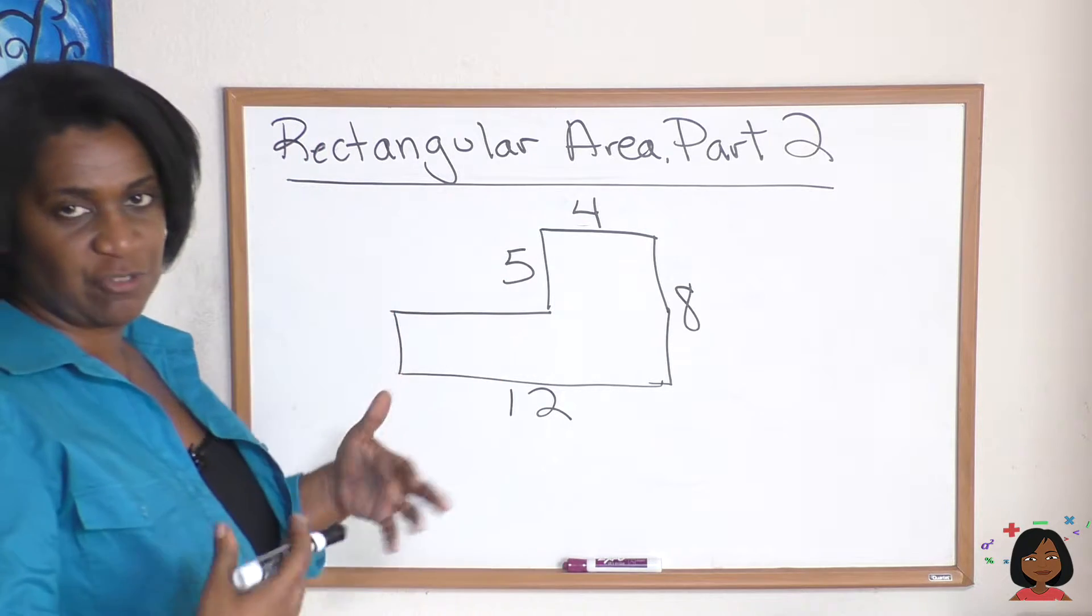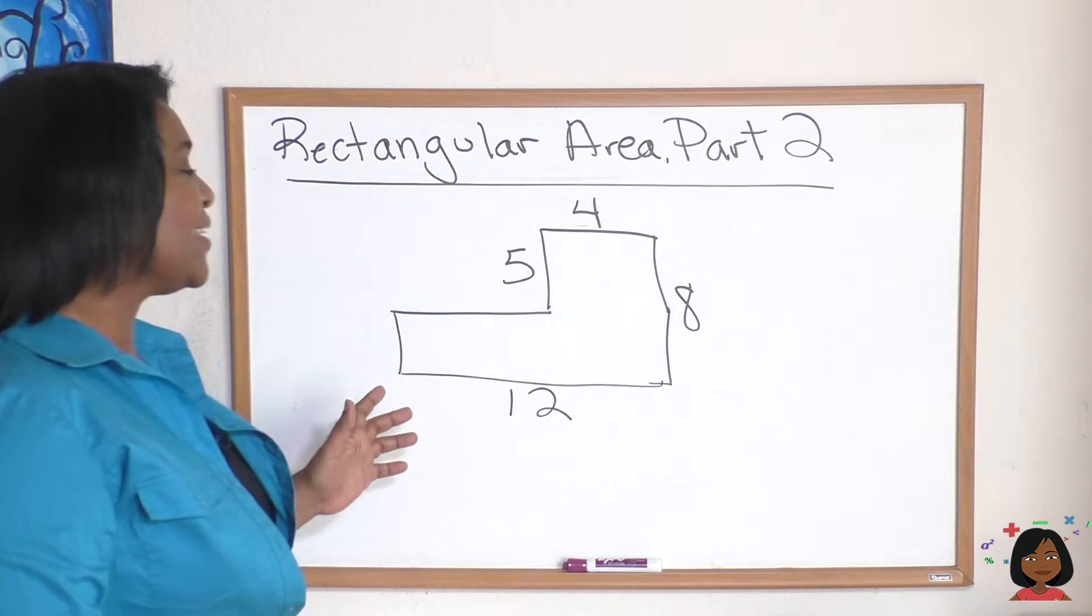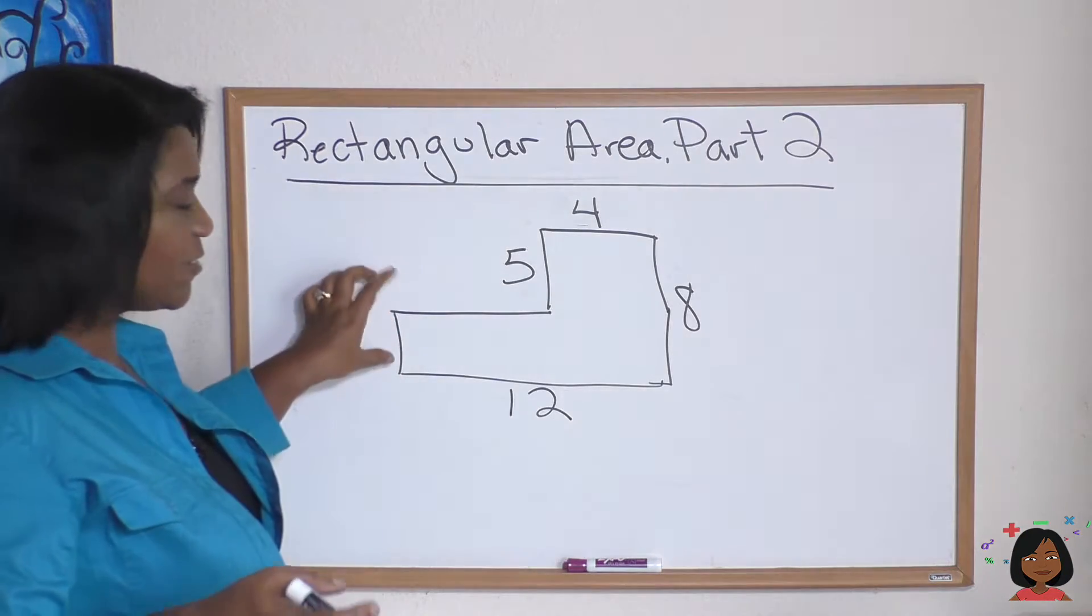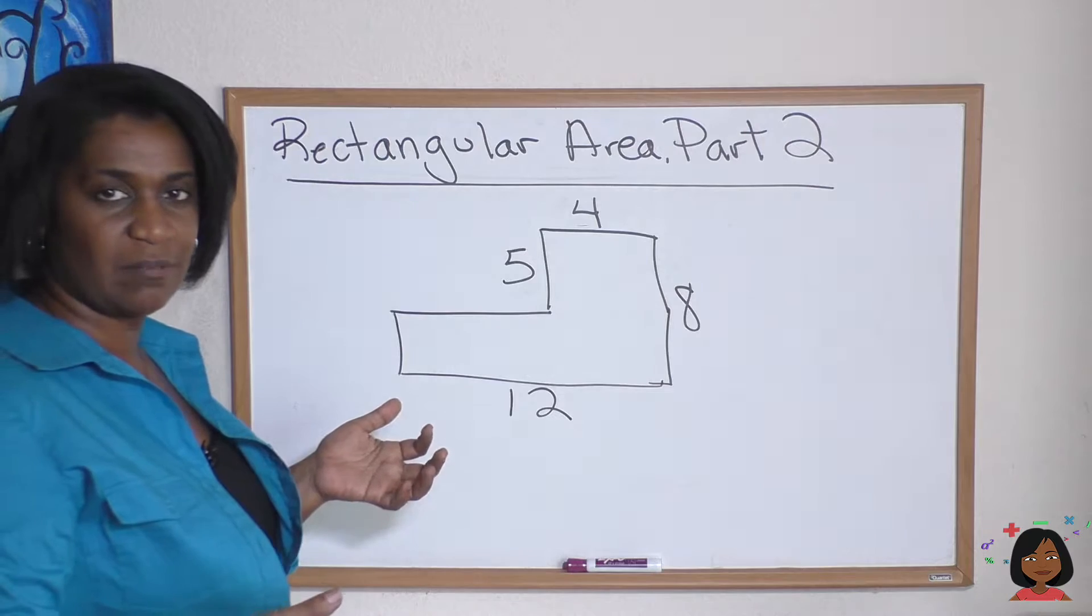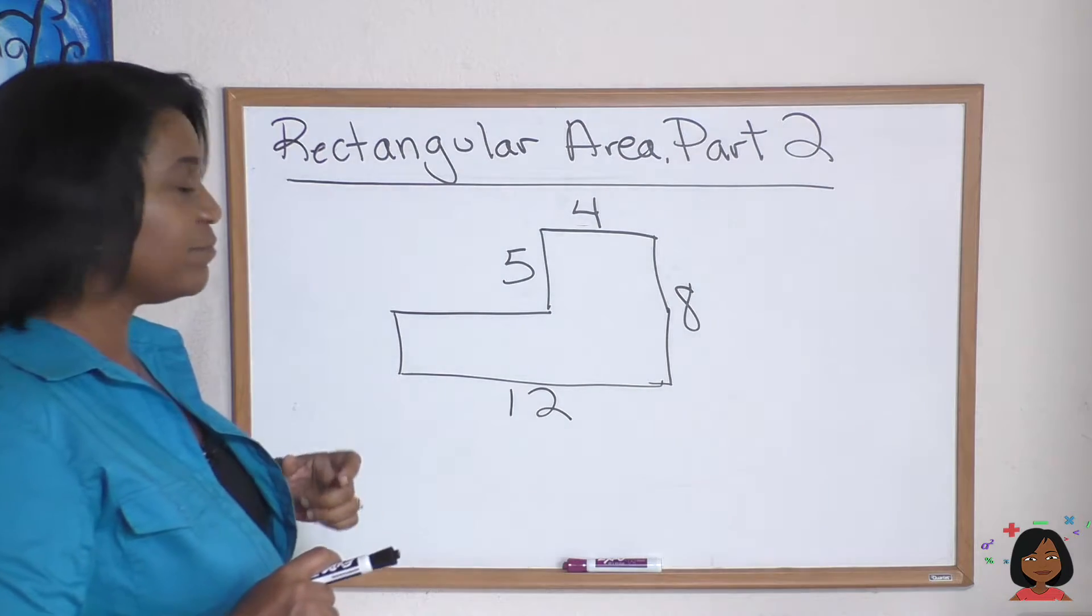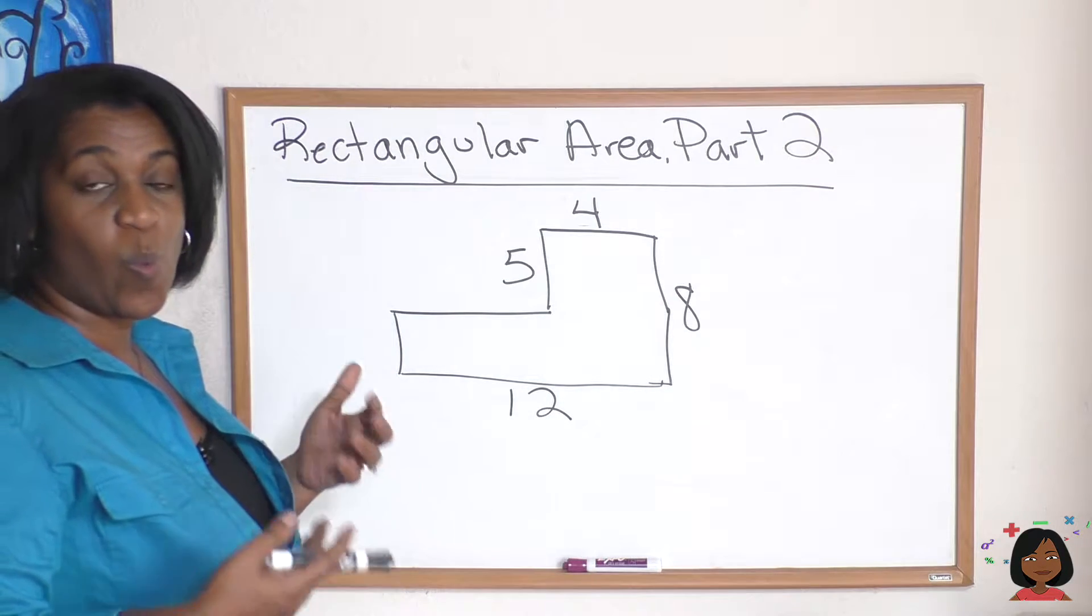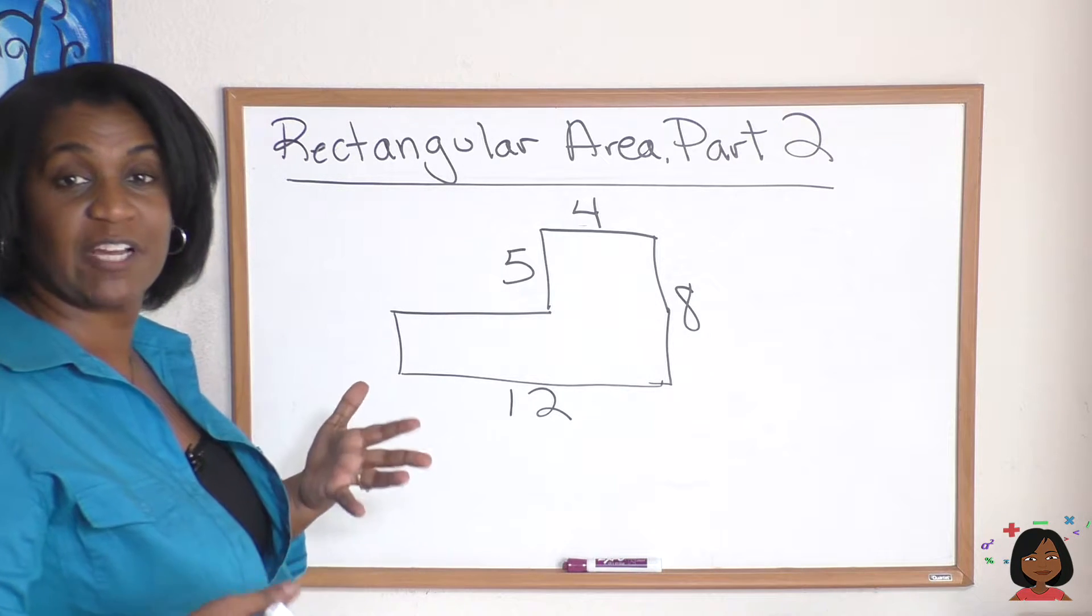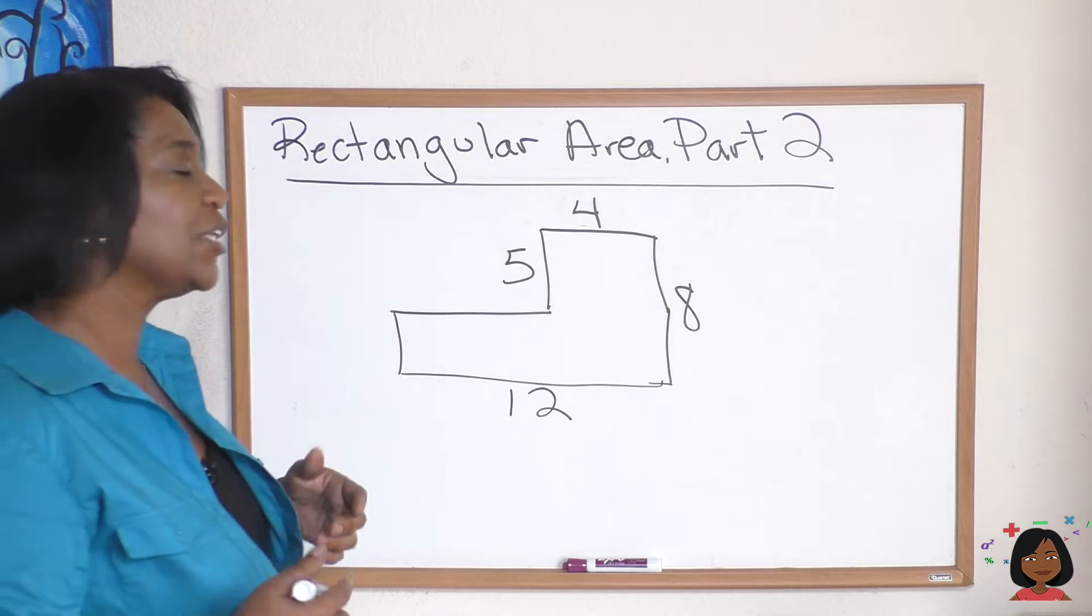Here you can see we've got an interesting figure and we're missing some sides. So we're gonna have to do a little bit of work to find out what the missing sides are. The second thing is once we find that out we're gonna need to break this down into a couple of pieces to figure out the area.